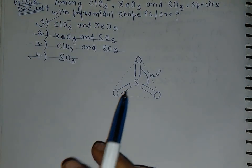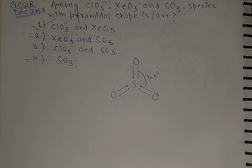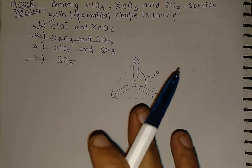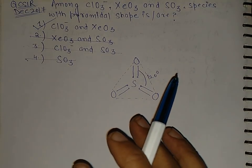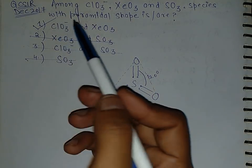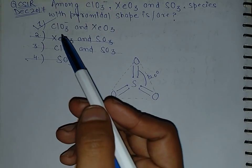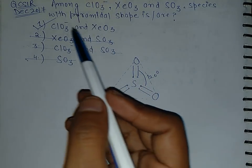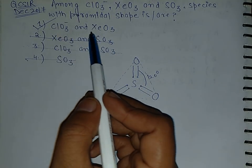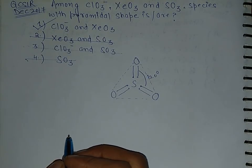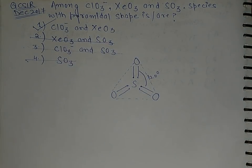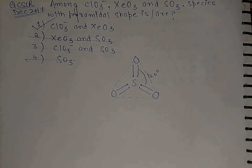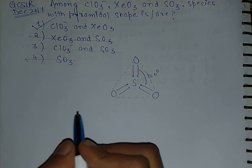The first option is the only option left, so it is the correct answer. This was a very easy question that will give you marks. Now let's check the shape of chlorate ion and XeO3 to verify.